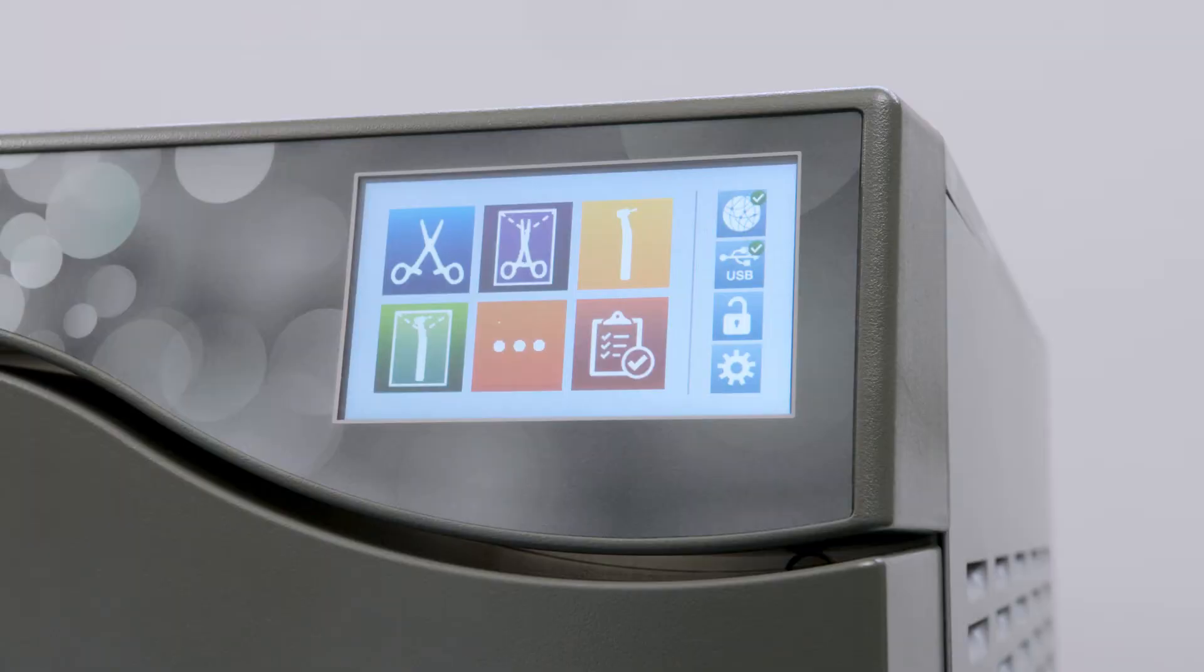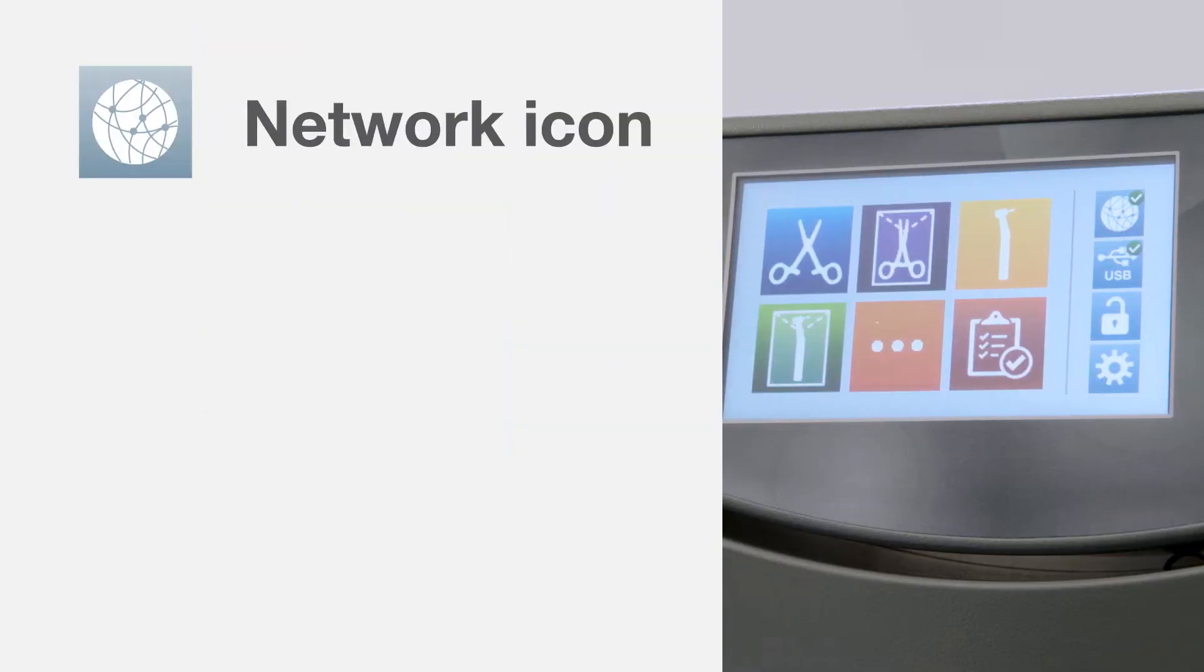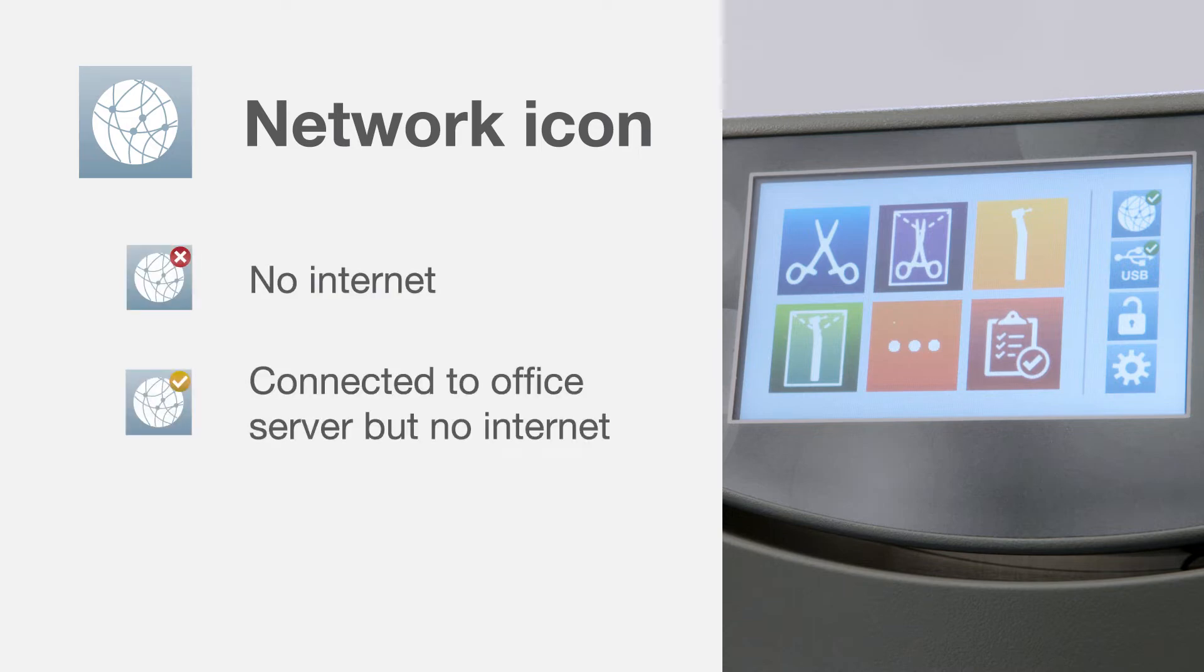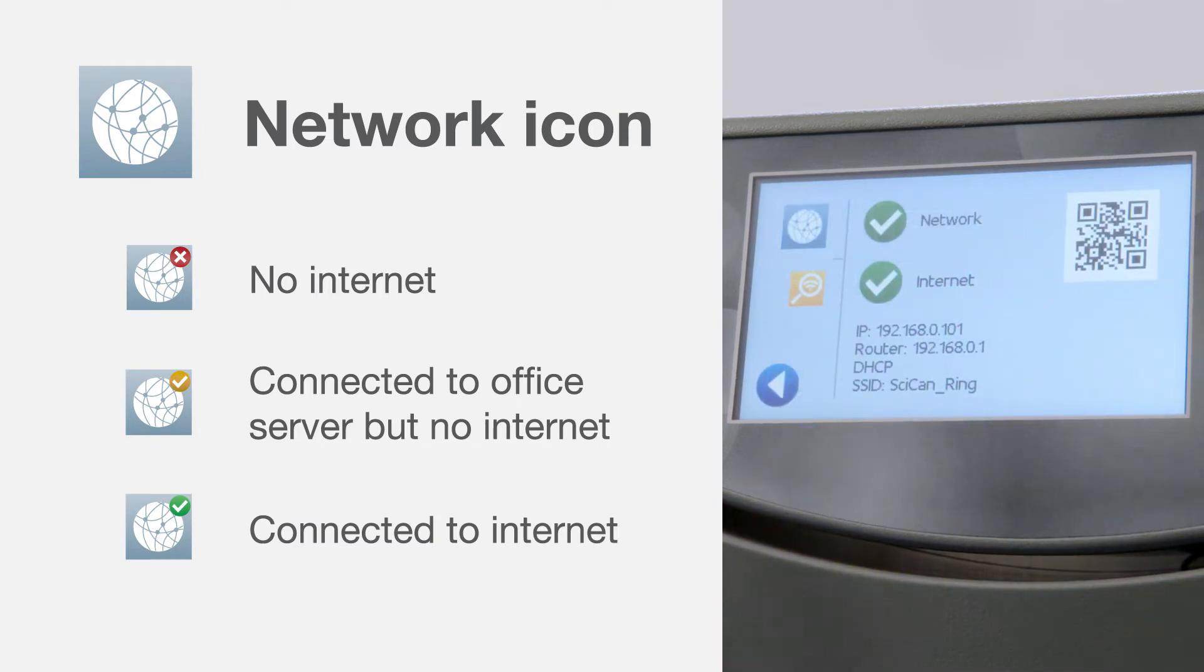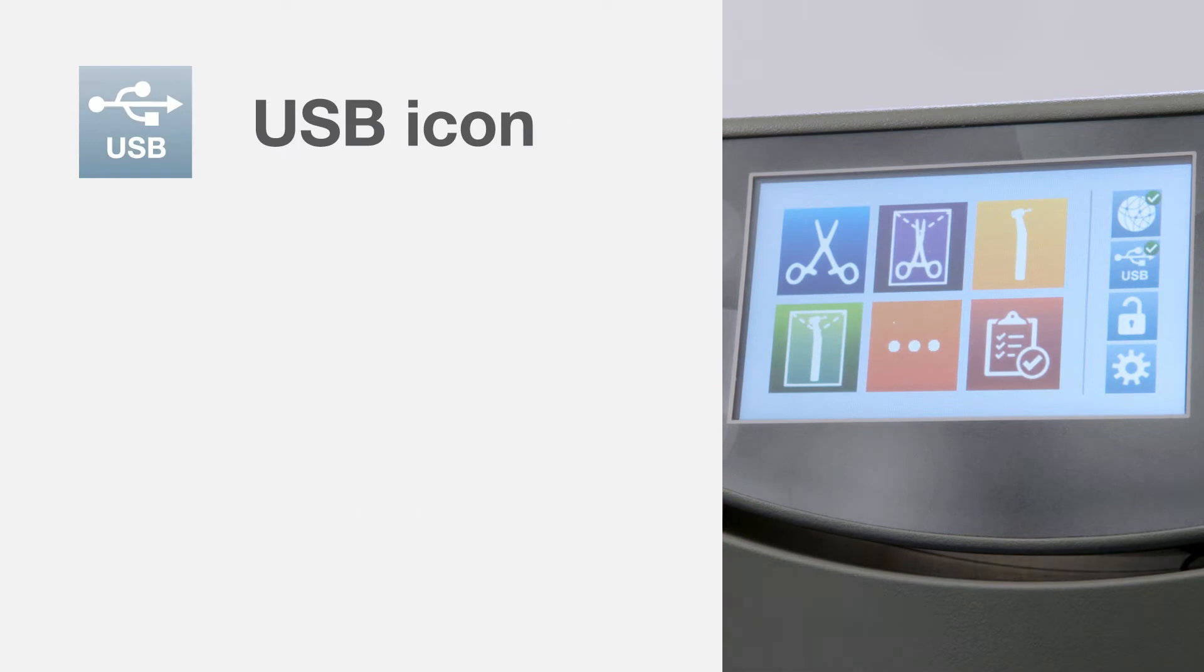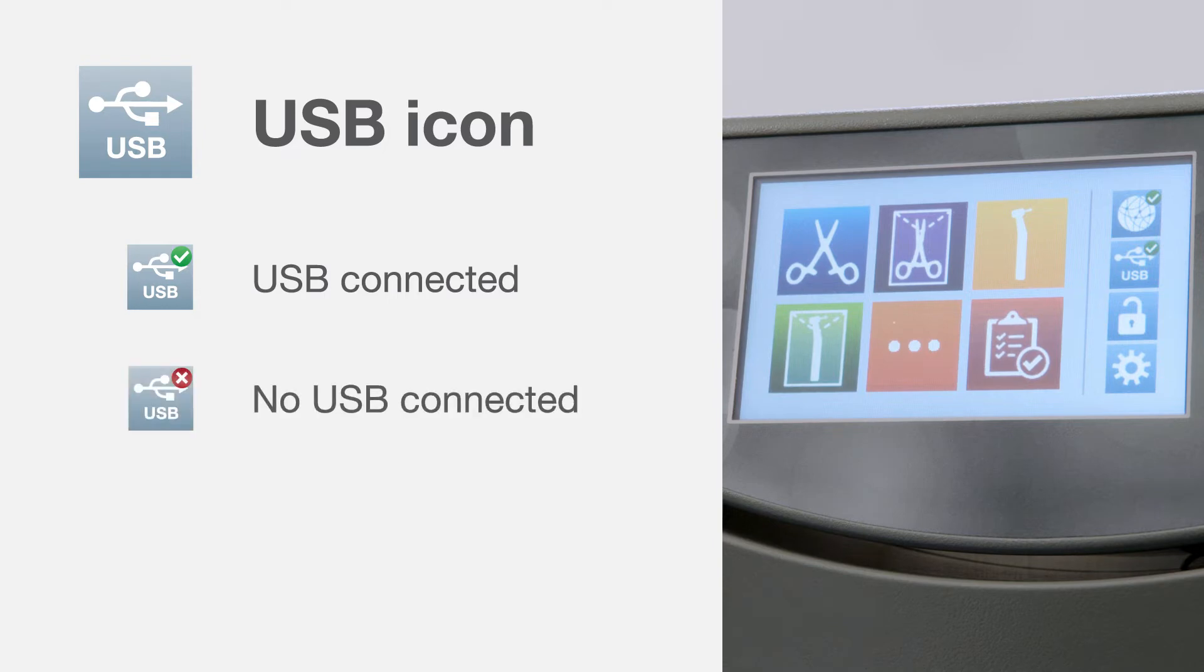Along the right side of the touch screen are some additional system icons. The globe icon shows the status of the network connectivity. It is used when connecting to the internet. A red X indicates there is no internet connection. A yellow checkmark indicates the unit is connected to the office server, but not to the internet. A green checkmark indicates the unit is connected to the internet. If the unit was not connected to the internet during setup, press this icon to connect your unit via an ethernet cable or Wi-Fi. Below that is the USB status icon. A green checkmark indicates the USB key is connected and a red X indicates there is no USB. The icon will turn yellow. The USB is recording cycle information.